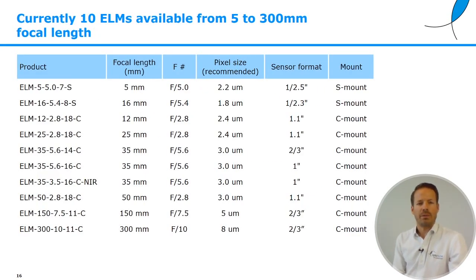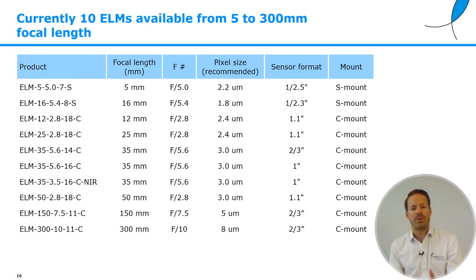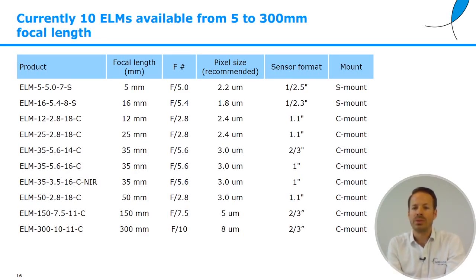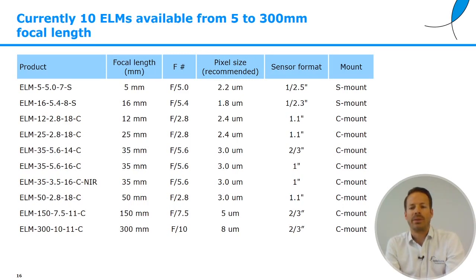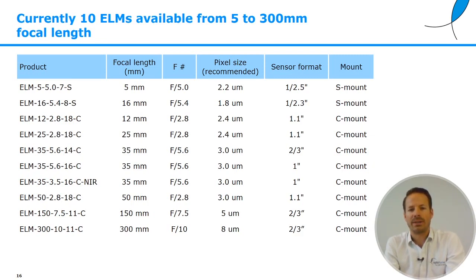Here's a list of 10 ELMs which are currently available. They go from 5 to 300 millimeters focal length, including two S-mount modules, and the others are all C-mount: 12, 25, 35, 50mm, and we also have some longer focal lengths like 150 and 300mm.